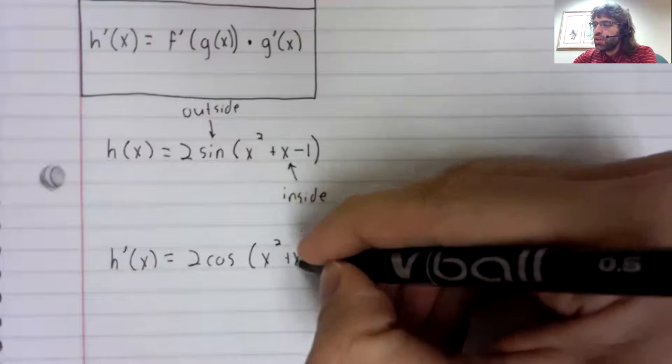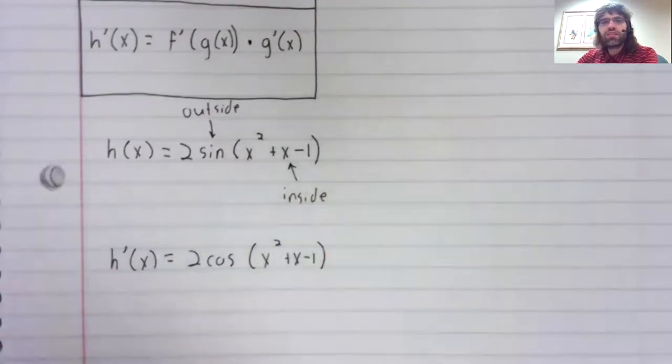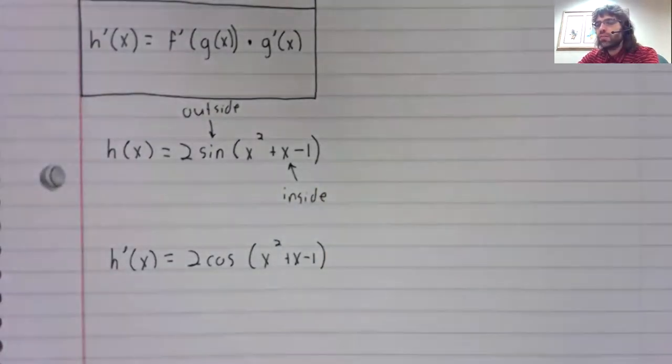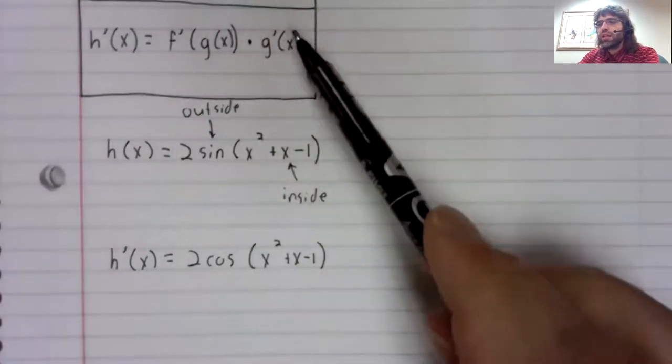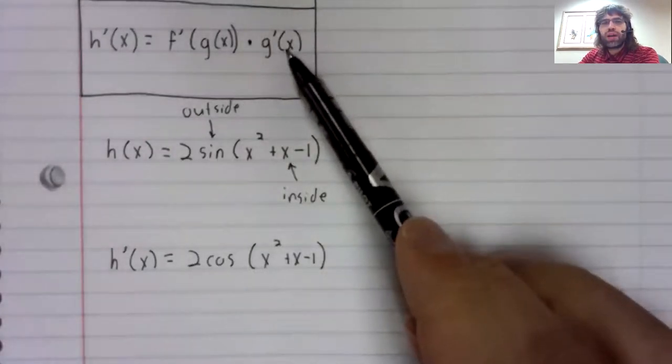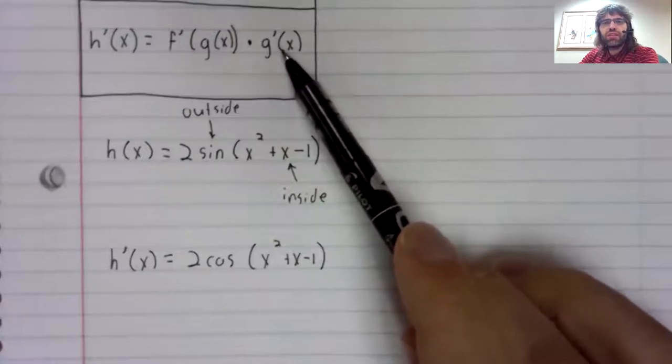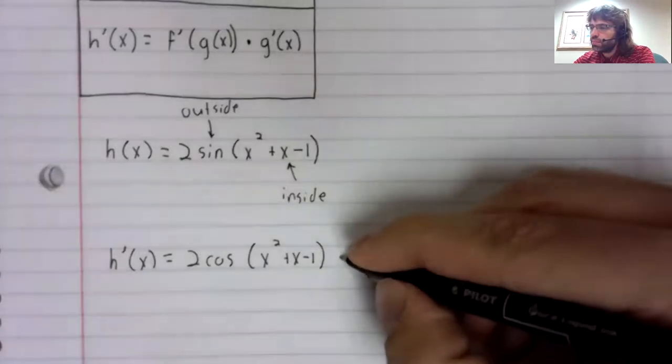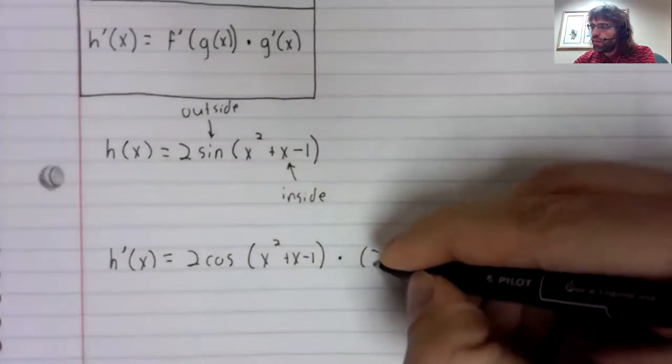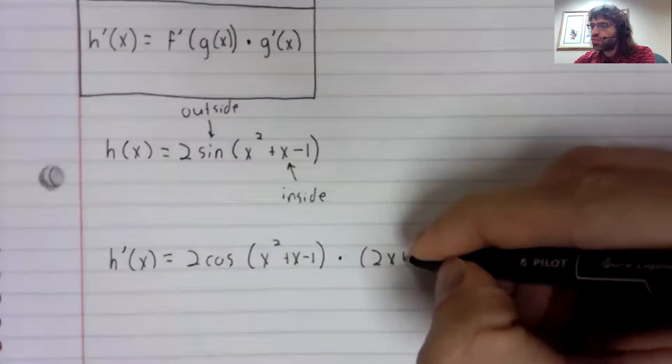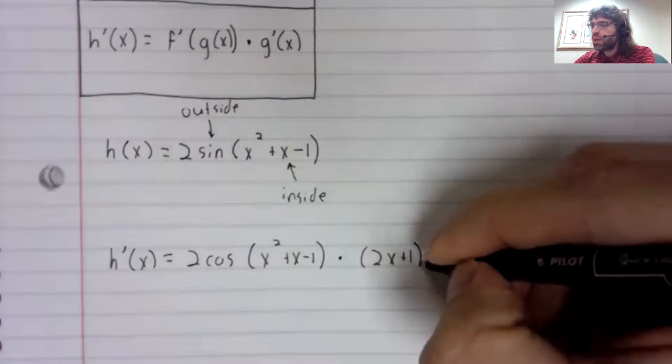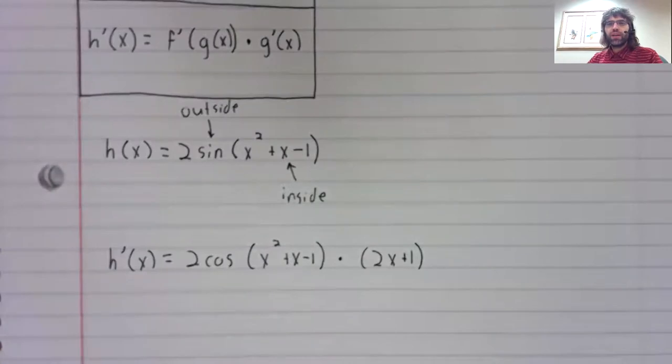Of x squared plus x minus one. And now we should multiply by the derivative of the inside function, by 2x plus one. There's the derivative according to version two of the chain rule.